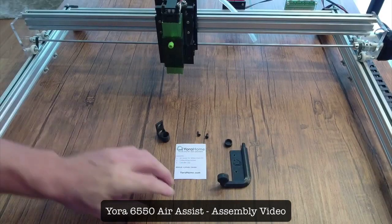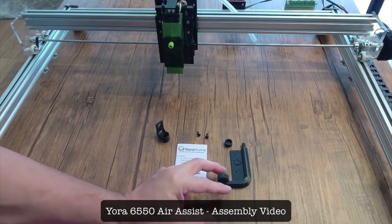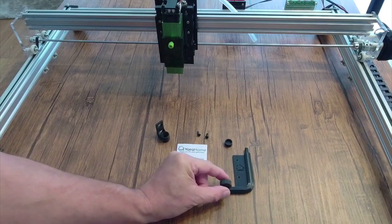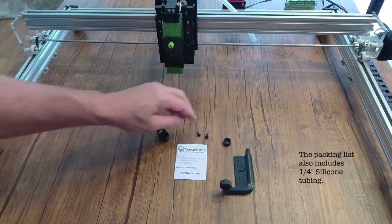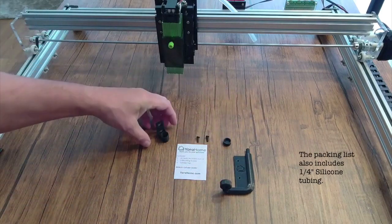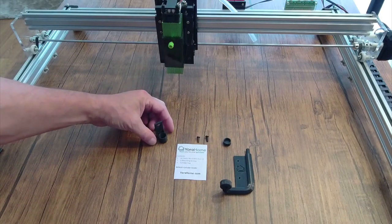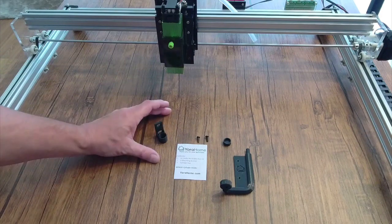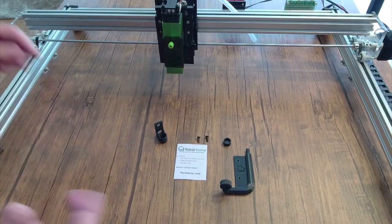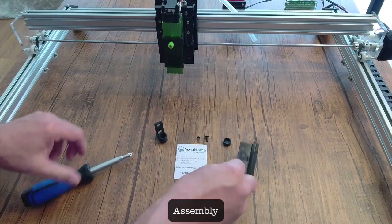Today we're going to go through installing the new air assist. In your package you should have received the actual air assist head unit, a cylinder cap, two screws, and a cylinder holder. The first 50 customers were given a free cylinder holder, so hopefully you got one of them. We'll go through that at the end.